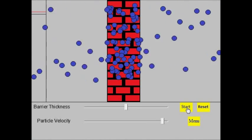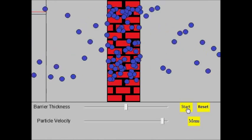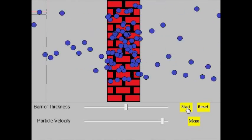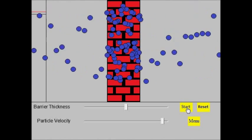Speed up the particles such that their energy exceeds that of the barrier, then almost all of the particles get across the barrier, but at a slower speed.